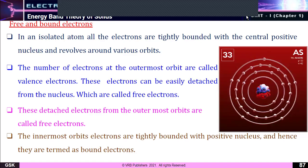The number of electrons in the outermost orbit are called valence electrons. These electrons can be easily detached from the nucleus and are called free electrons. The valence electrons are involved in the formation of chemical bonds between atoms. The innermost orbit electrons are tightly bound with the positive nucleus and are termed bound electrons.